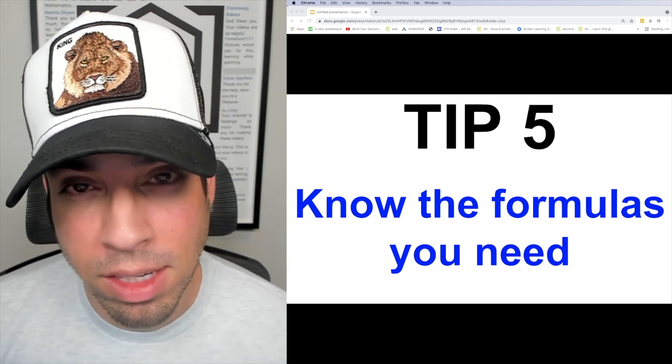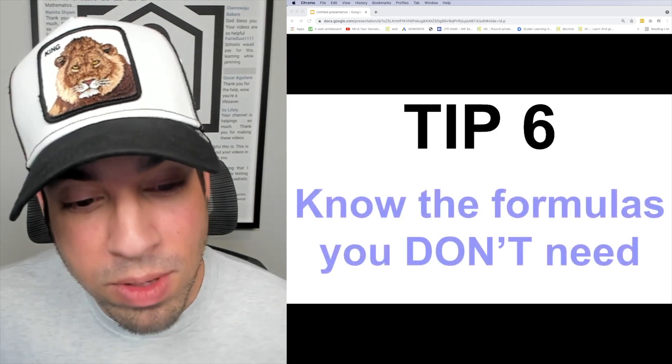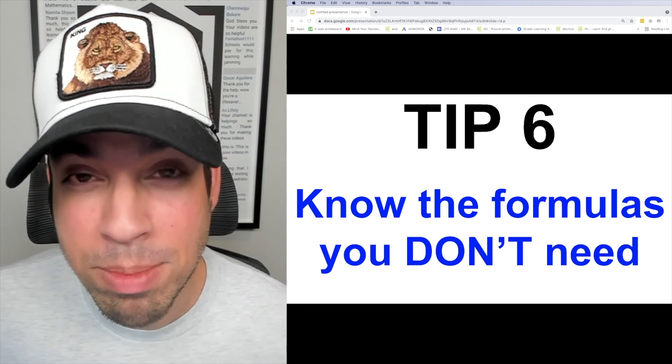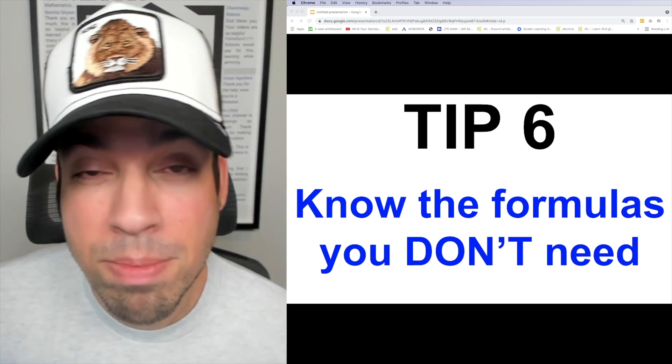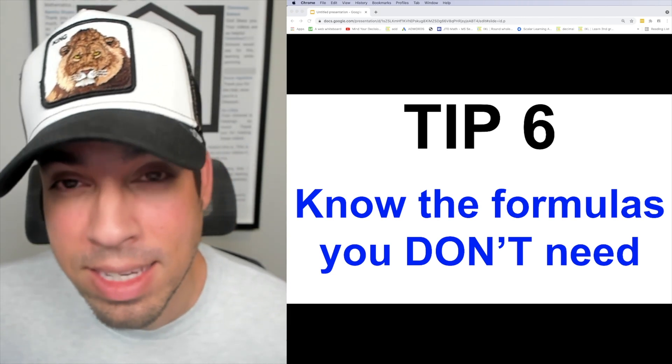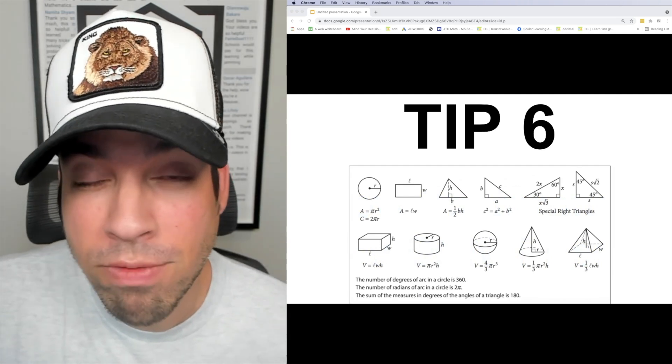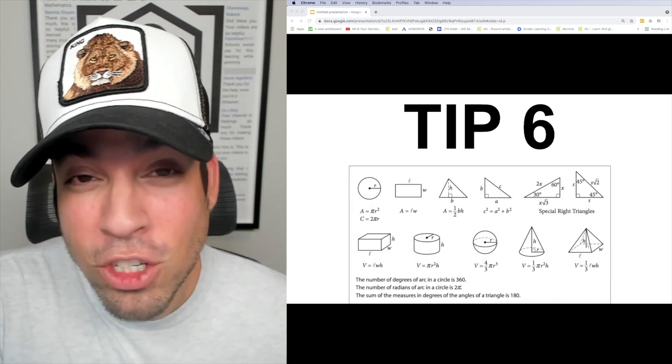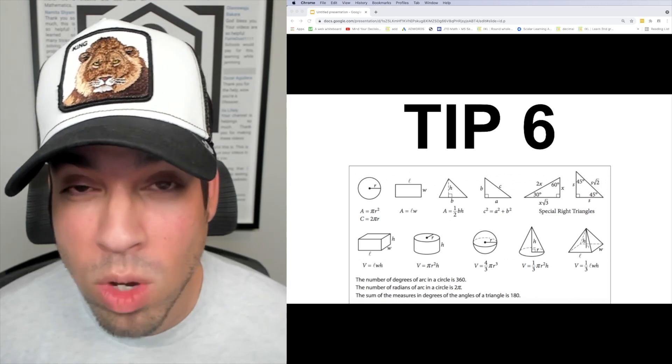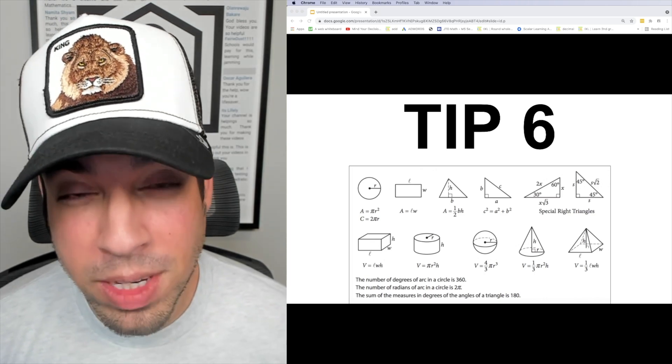Finally, tip number six. Just like you got to know the formulas that you need, you've got to know the formulas that you don't need, meaning you got to know what formulas are actually going to be given to you on the SAT. At the beginning of both the no calculator and calculator sections of the SAT, you're given the following reference sheet with tons of awesome geometric formulas. So guess what? That information is stuff that you don't need to memorize. It's right there, but you got to know where to find it and what's on there, so if you need it you can reference back.